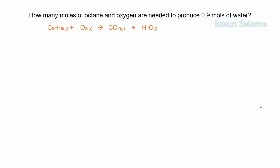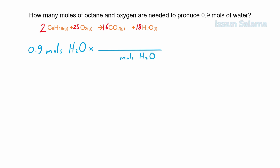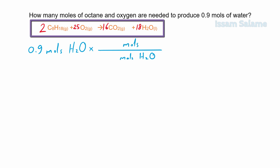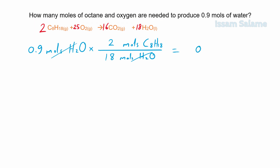Let's solve one more exercise. How many moles of octane and oxygen are needed to produce 0.9 moles of water? We balance the chemical equation first by multiplying octane by 2, carbon dioxide by 16, water by 18, and oxygen by 25. We start with the given: 0.9 moles of water multiplied by the fraction — moles of water in the denominator, moles of octane in the numerator. The coefficients are 2 next to octane and 18 next to water. The answer is 0.1 mole of octane.